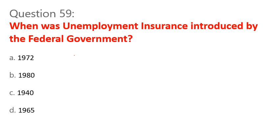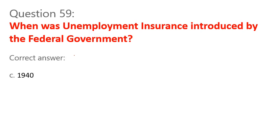Question 59. When was unemployment insurance introduced by the federal government? A. 1972. B. 1980. C. 1940. D. 1965. Correct answer: C. 1940.